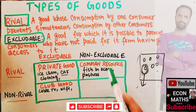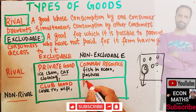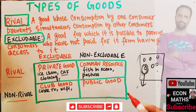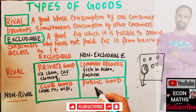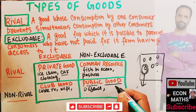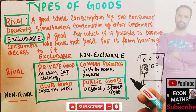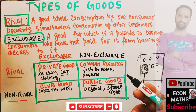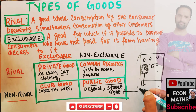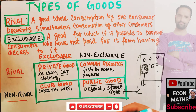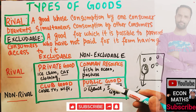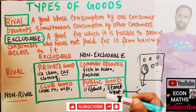Another type of good is non-rival and non-excludable — these are called public goods. Examples include national defense, public street lights, and public parks, which are provided by the government and funded through taxes. We cannot exclude anyone from using defense or street lights, and they are non-rival in the sense that consumption by one person does not prevent simultaneous consumption by another.